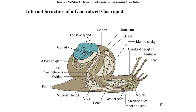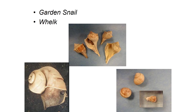Here's a generalized internal structure — this is the one that goes along with your note packet, so you should pause and label the items that are missing from your diagram. Here are some examples of different gastropods: a garden snail and a whelk. The bottom one is the whelk.